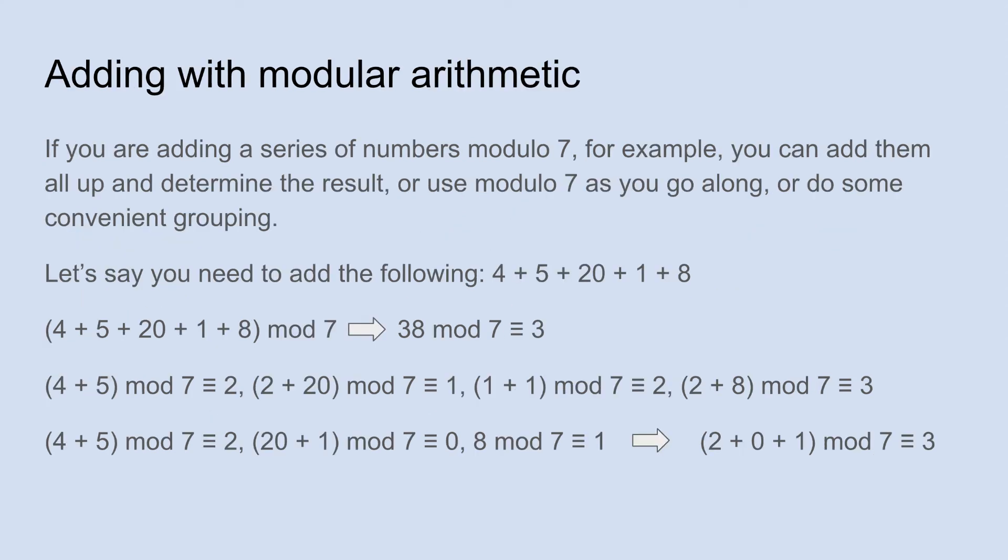Now, again, if you are trying to use the algorithm to calculate a day of the week given a certain date, you're going to be adding up a series of numbers, and then you're going to be interested in the result mod 7 or modulo 7. So there's kind of three ways you can do this. One way is just add up all the numbers as you would normally.